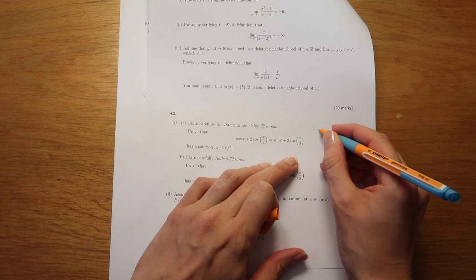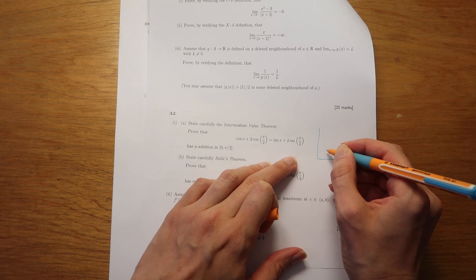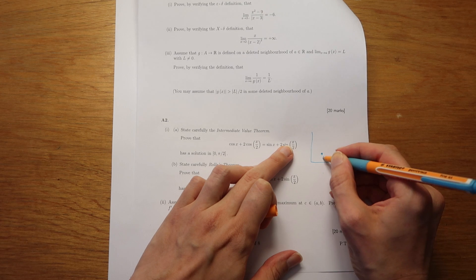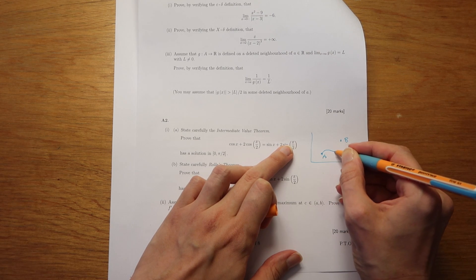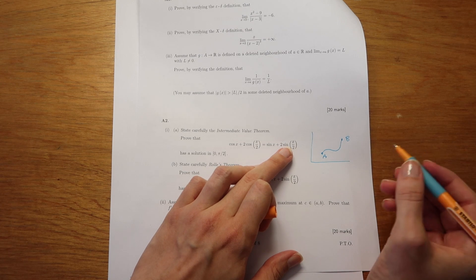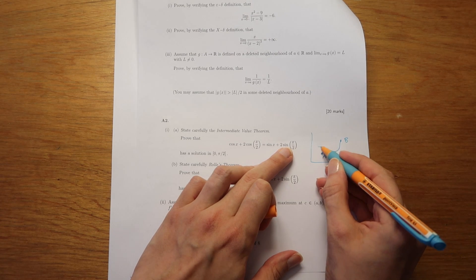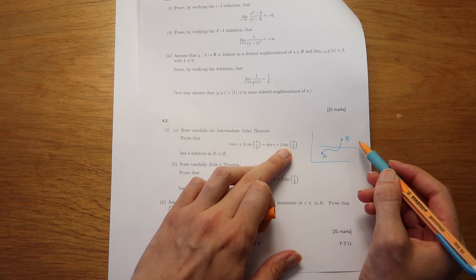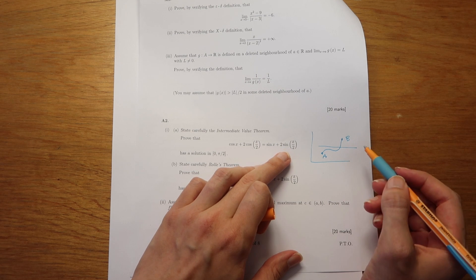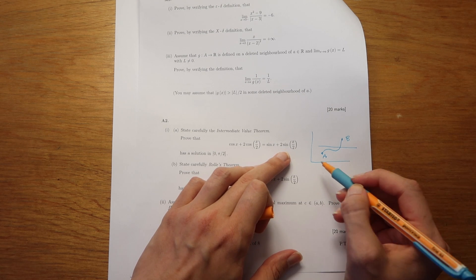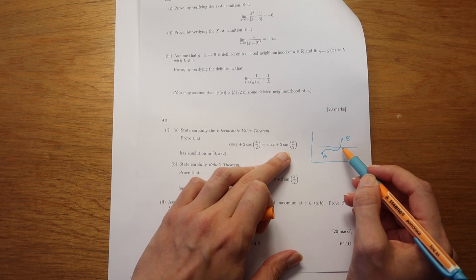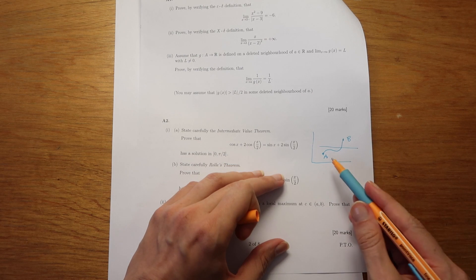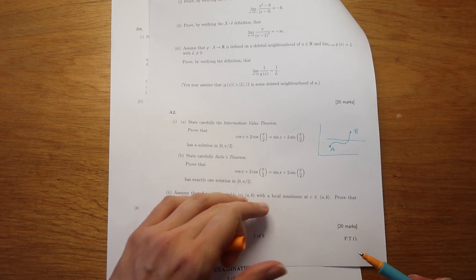You've got an axis, you've got a point A and you've got a point B. If that's a continuous curve and you've got say a certain line, you've got one point below the line and one point above the line, then at least one place on the curve is going to cross that line.